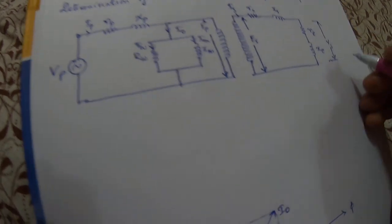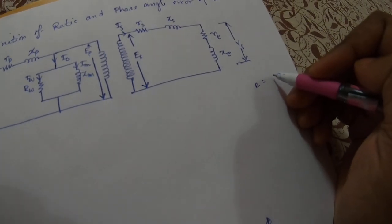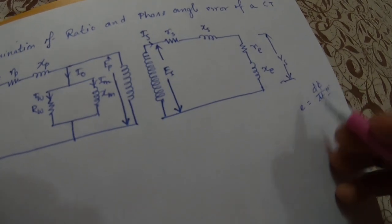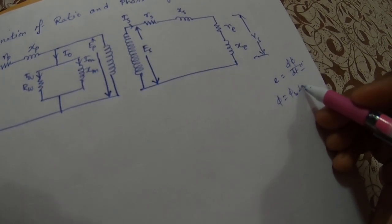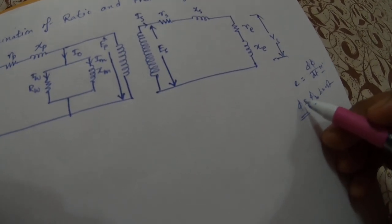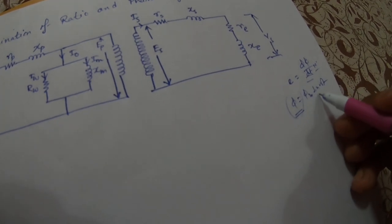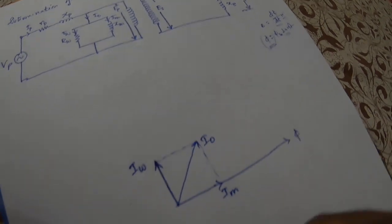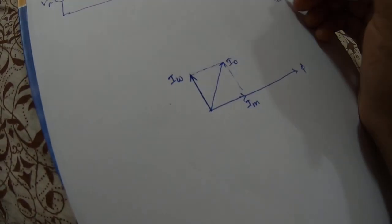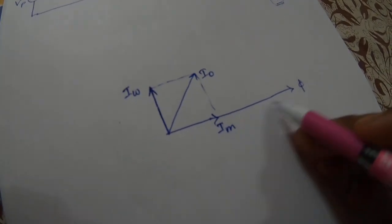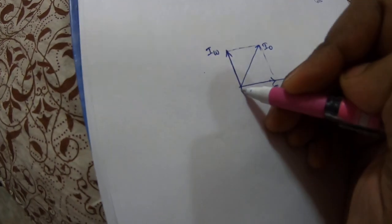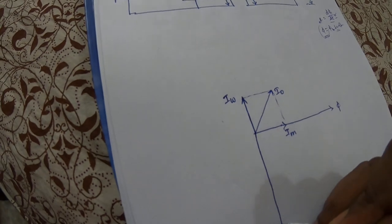The induced EMF equals dφ/dt times N. If we plot flux as φ = φm sin(ωt), then by differentiation we get a cosine component. A cosine component means it lags the main flux by 90 degrees. So since we derive E from the flux, if the flux is plotted along the x-axis, the induced EMF on either the primary or secondary side is plotted lagging 90 degrees to the main flux.